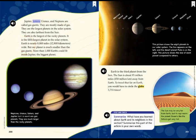Jupiter, Saturn, Uranus, and Neptune are called gas giants. They are mostly made of gas. They are the largest planets in the solar system. They are also farthest from the sun. Earth is the largest of the rocky planets. It is the fifth largest planet in the solar system. Earth is nearly 8,000 miles wide. But our planet is much smaller than the gas giants. More than 1,000 Earths could fit inside Jupiter, the biggest planet.